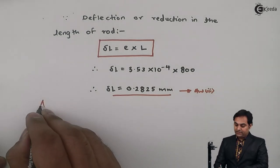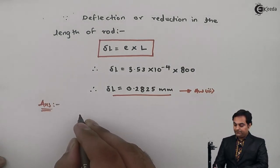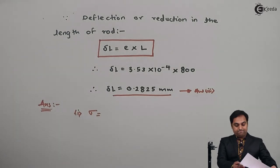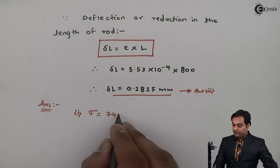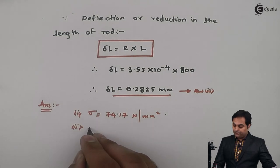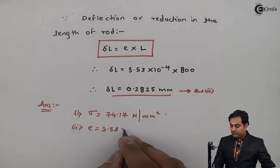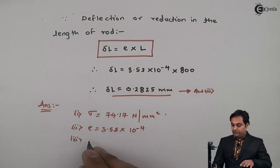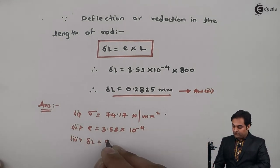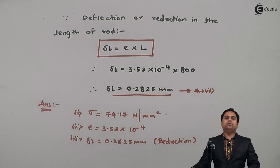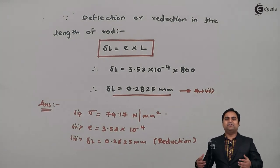After finding all the answers: stress, answer number one, is 74.17 Newton per mm square; strain is 3.53 × 10⁻⁴; and deflection, that is the reduction in length, delta L = 0.2825 mm. In this video we have seen how to calculate stress, strain, and reduction in length of a rod.